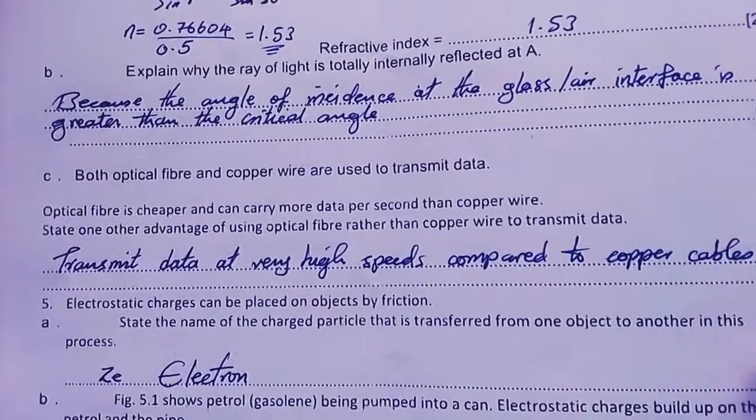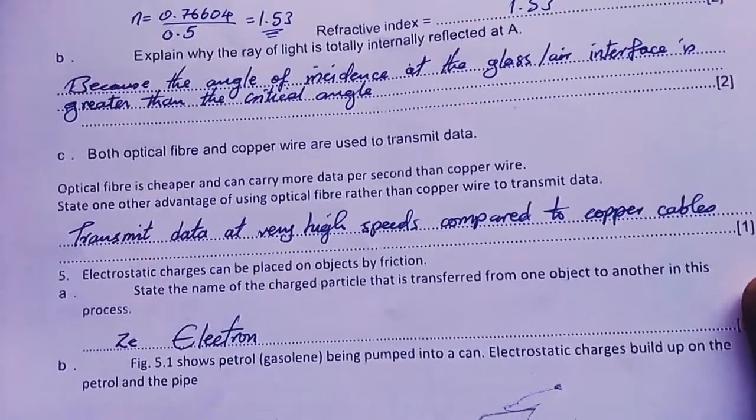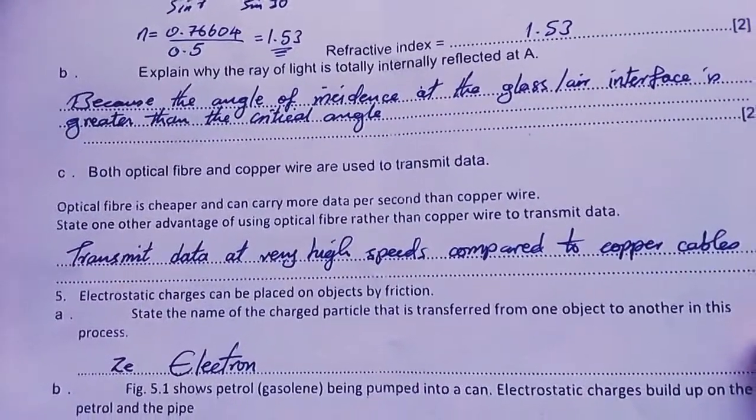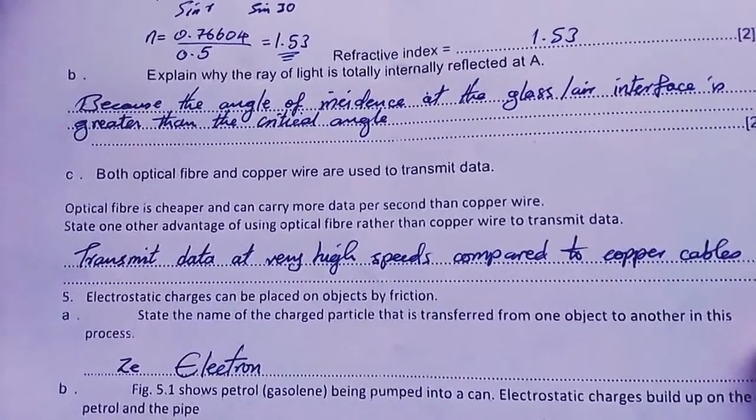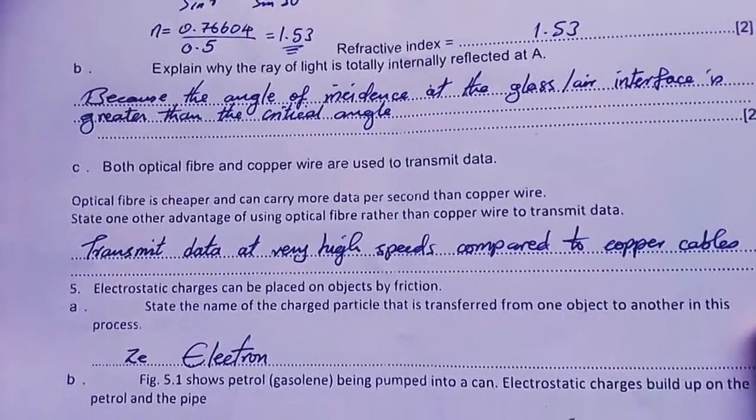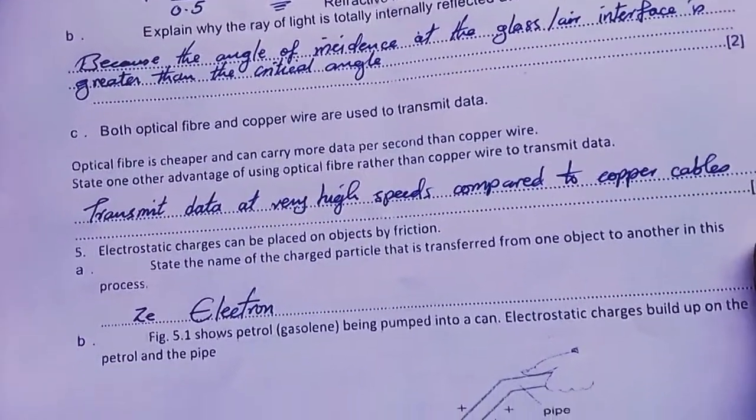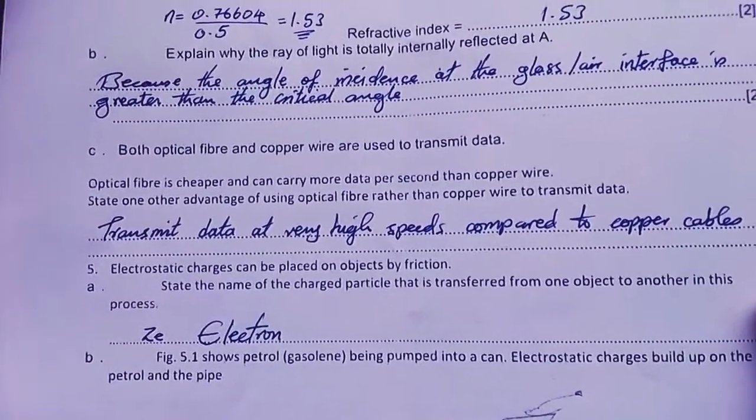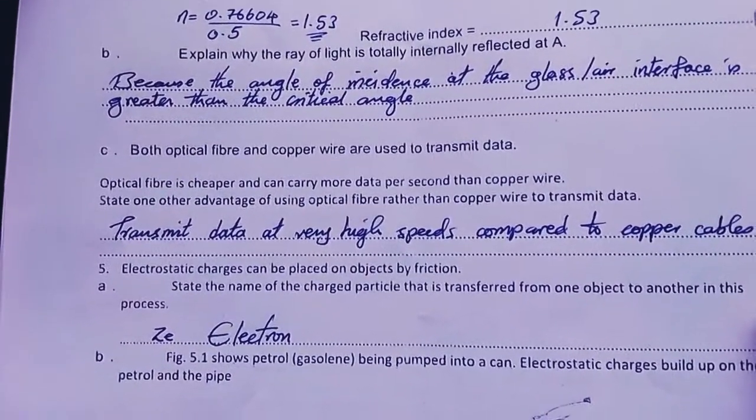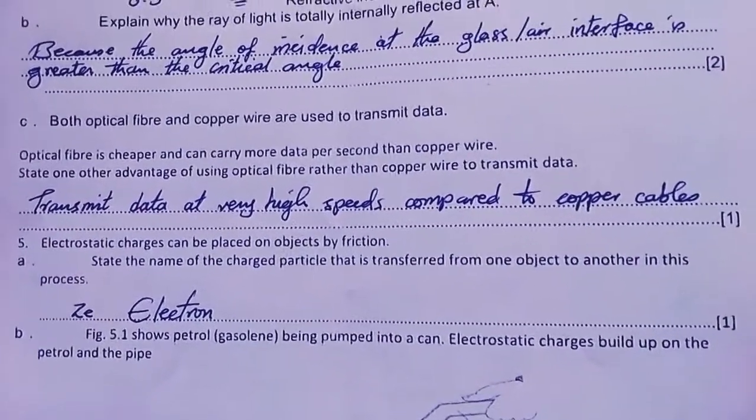Both optic fiber and copper wire are used in transmission of data. The optic fiber is cheaper and can carry more data per second than copper wire. State one advantage of using optic fiber rather than copper wire. They transmit data at very high speeds compared to copper wire in the form of light. Light is still faster than electricity. They don't easily wear out because they are coated. You can have a lot of fibers in one bundle. Copper is heavy; these fibers are less heavy.